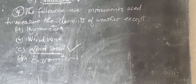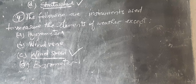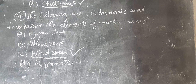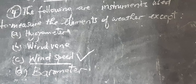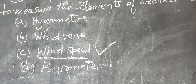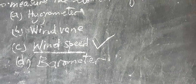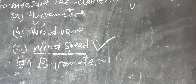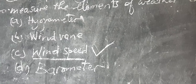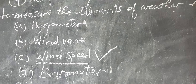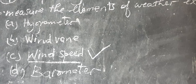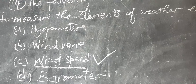Question number four: the following are instruments used to measure the elements of weather, but which one is not an instrument used to measure those elements? A. Hygrometer, B. Wind vane, C. Wind speed, D. Barometer. The correct answer is Wind speed — wind speed is not an instrument. Hygrometer measures humidity, wind vane measures wind direction, and barometer measures air pressure. Therefore the correct answer is C.